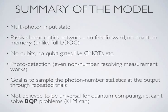Here's a summary of the model. The first thing we do is prepare a multi-photon input state — just a bunch of single photon number states, or Fock states, and some vacuum states. We then have a passive linear optics network which does not contain feed-forward or quantum memory, and we evolve that multi-photon state through it. Unlike other models for quantum computation, in the boson sampling model there is no concept of qubits or qubit gates — no CNOT gates or Pauli gates. After evolving through the network, we perform photo detection and sample the photon number distribution at the output, repeating this many times over.